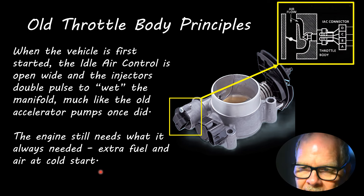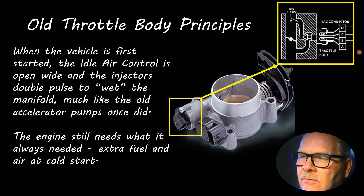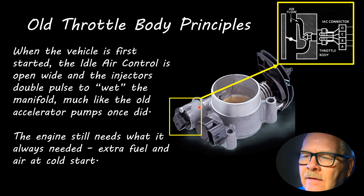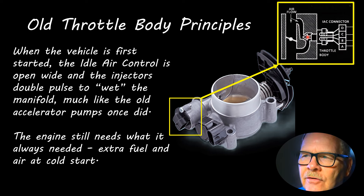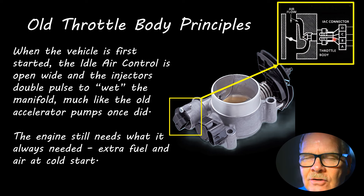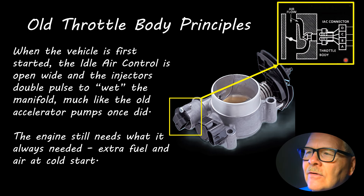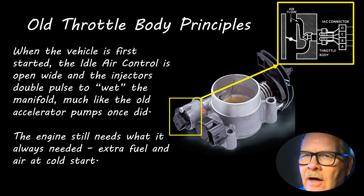The engine still needs extra fuel and air at cold start. The idle air control is a stepper motor — one of the coils will be hot and it walks around through the others, turning a little screw that moves the valve in and out. There are threads on it, it can't turn, so it turns the sleeve and it goes in and out. When you look at your scan tool you can tell by the number of steps how far the idle air control has opened, and it doesn't move very fast. They're not all wired the same way — a Jeep doesn't work like a GM, and some Chryslers work differently too.